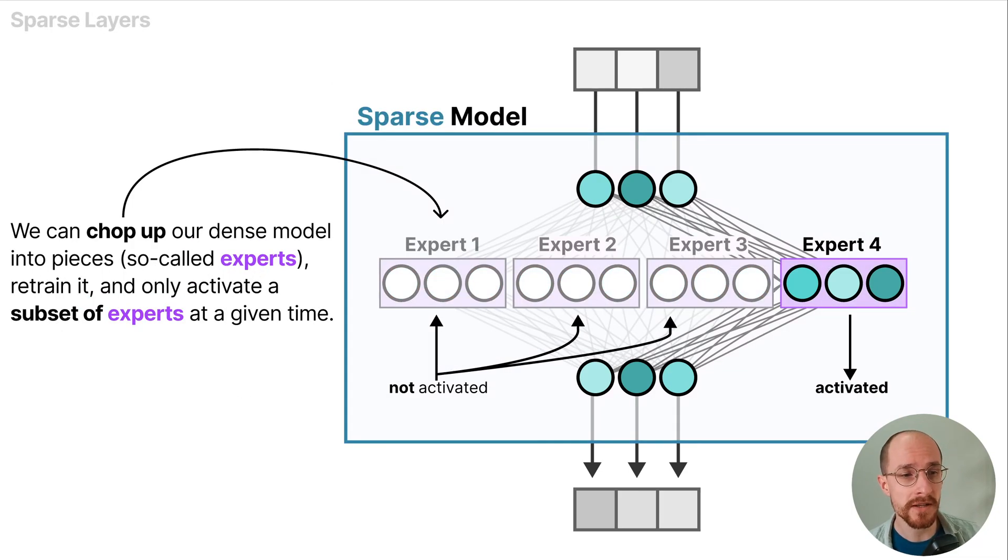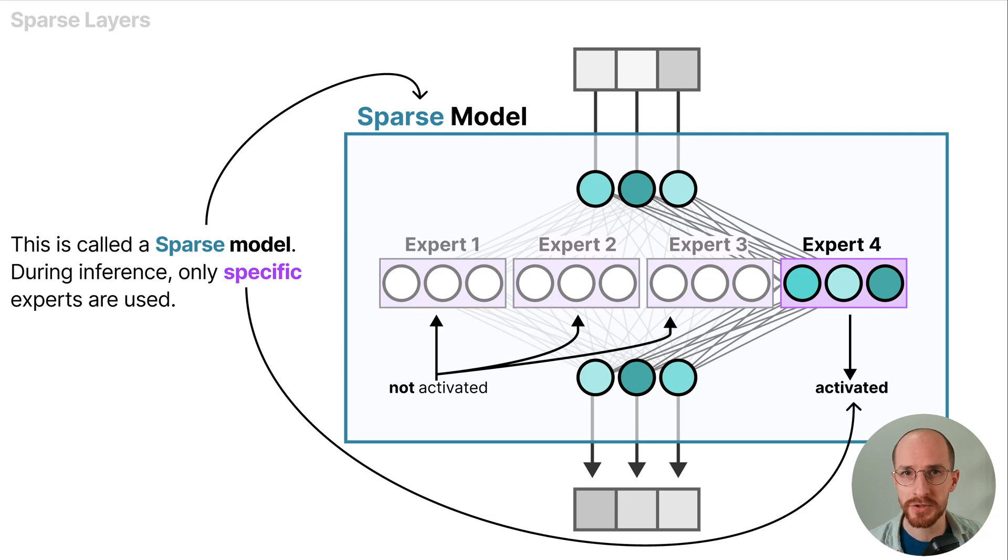We can chop up our dense model into pieces, the so-called experts, retrain it and only activate a subset of experts at a given time. This is called a sparse model and during inference only specific experts are used.